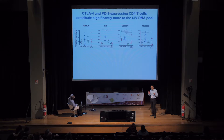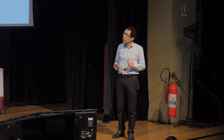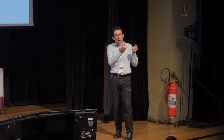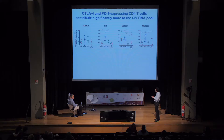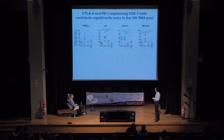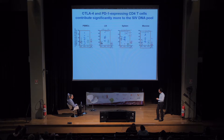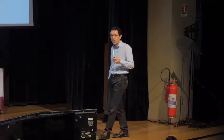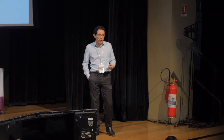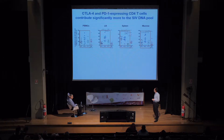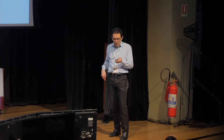CTLA-4-expressing cells are much less frequent than PD-1-expressing cells, so when you calculate the overall contribution to the reservoir — accounting for both frequency of SIV DNA per cell and how many such cells exist in the body — the large majority of virus comes from cells expressing PD-1 or both PD-1 and CTLA-4. Cells expressing PD-1, CTLA-4, or both account for up to 80–90% of SIV DNA in many locations we examined, and both PD-1 and CTLA-4 can be targeted by antibodies being developed for cancer.